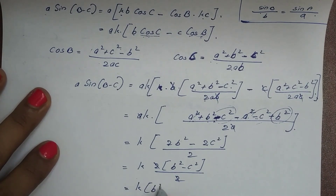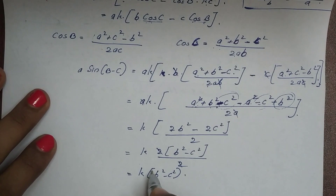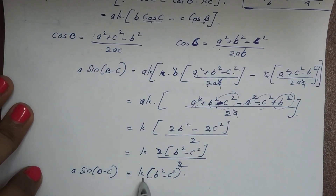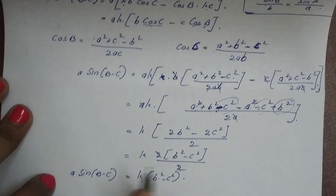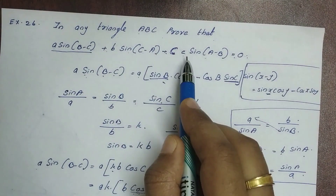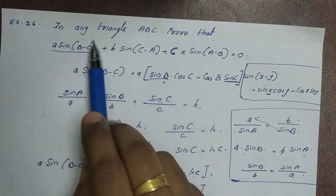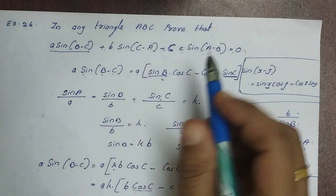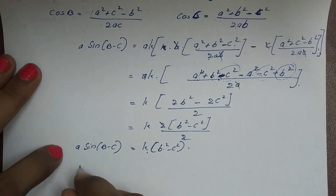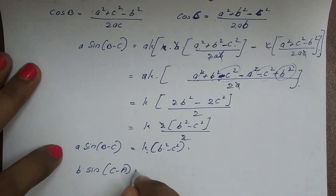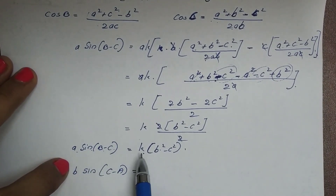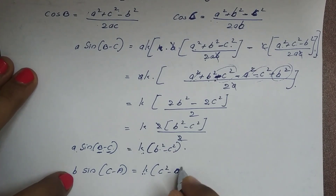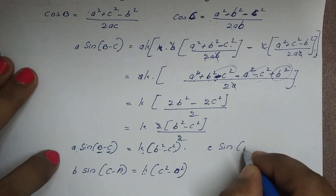Therefore a·sin(B−C) = k·(b² − c²). Similarly, b·sin(C−A) = k·(c² − a²) and c·sin(A−B) = k·(a² − b²). We will now add all three terms.